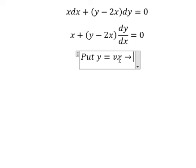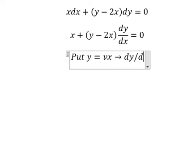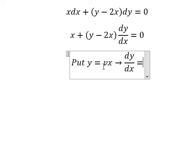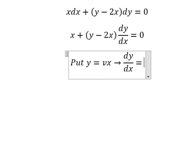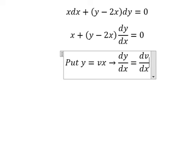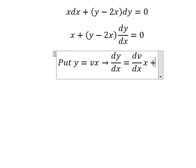So if we do first derivative for both sides, you get dy over dx. If we do first derivative of v, you get dv over dx multiplied by x. If we do first derivative of x, you get 1. That means you got v here.